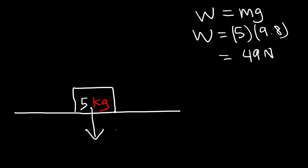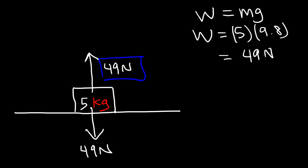The block exerts 49 newtons on the surface. The surface also exerts a force of 49 newtons. That force, which is perpendicular to the surface, is known as the normal force. In this example, it's an upward force — it's opposite to the weight force.